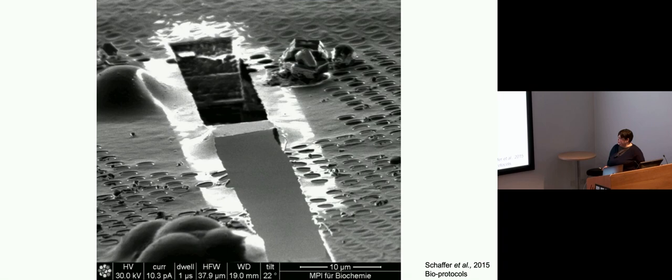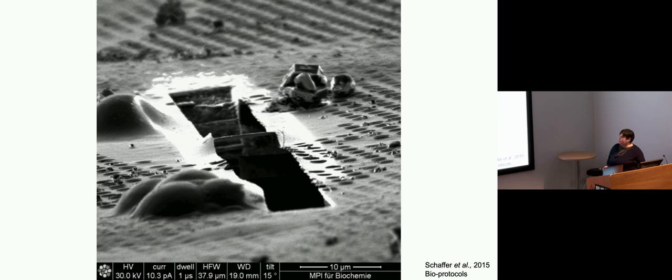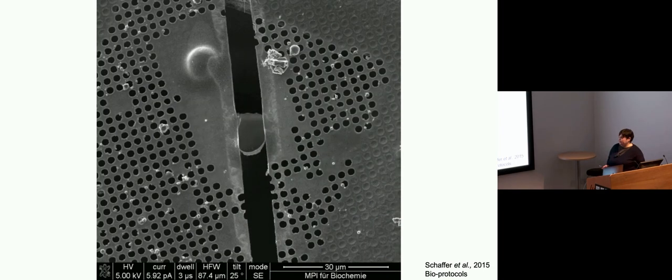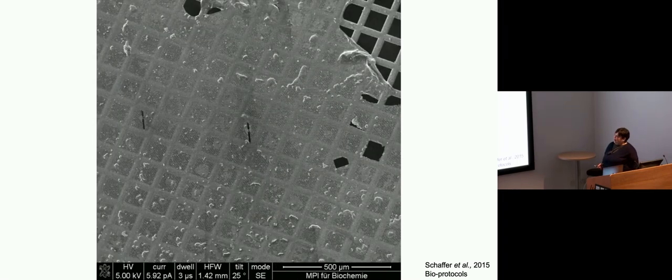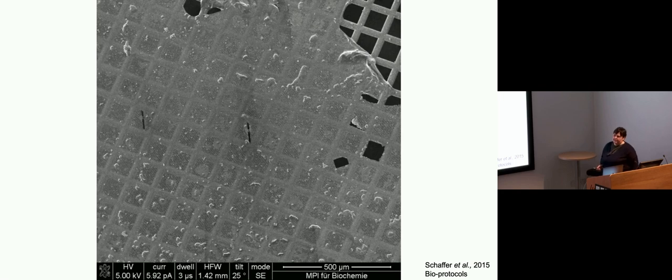There's the lamella. By tilting and rotating the grid, you can see this lamella that's not quite parallel to the grid. It's a little bit of an angle, but a relatively shallow angle. This is what it looks like in the SEM. In this case, there's another one being milled over here on the grid. In an ideal situation, you want to get as many of these on a grid as you can.